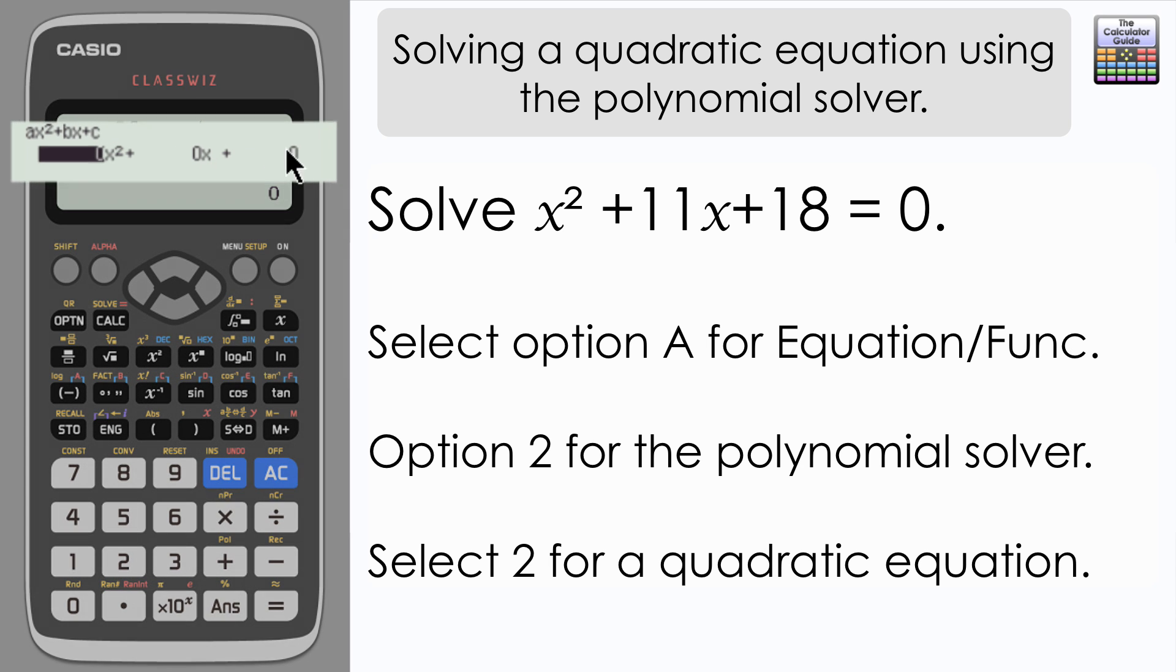Here we have the option to input our coefficients for the x terms. So because we've just got 1x squared, I'm just going to input 1 and then we've got 11x and then 18 on the end. Press equals and then equals again.